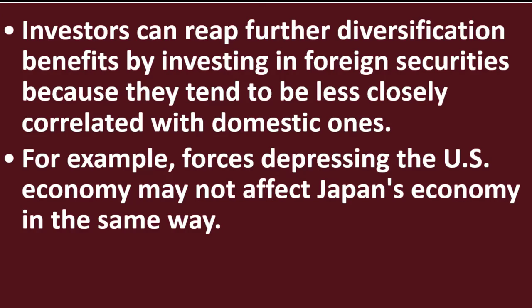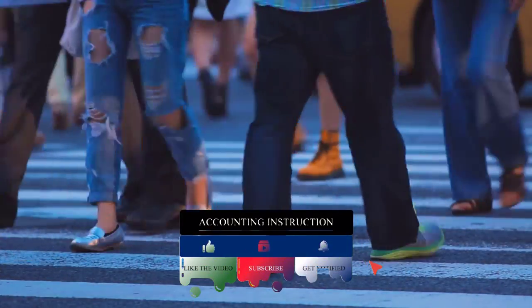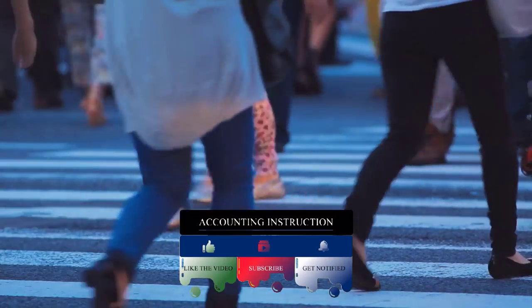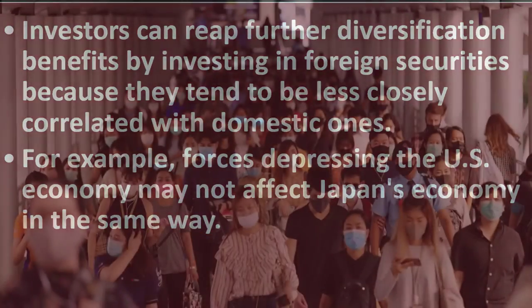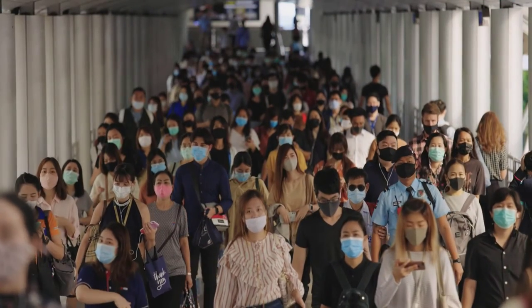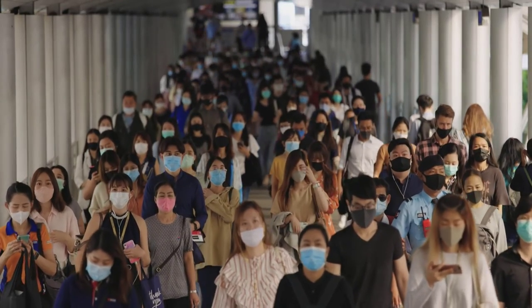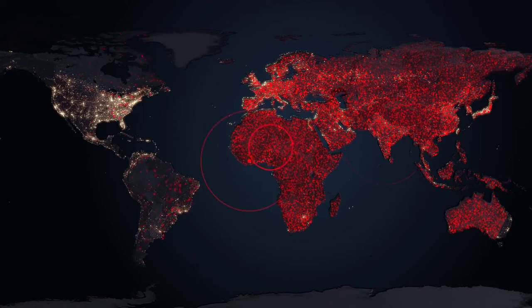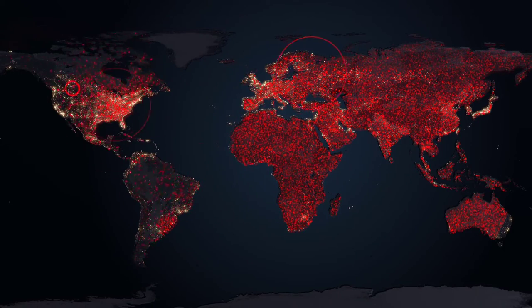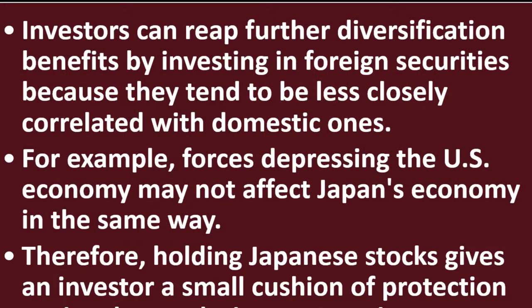For example, forces depressing the U.S. economy may not affect Japan's economy in the same way. More and more people have argued it's a global economy, with supply chains that run across the entire world. However, recently with the COVID pandemic, more people are decoupling from that global supply chain concept, seeing that the risk of a disruption in that supply chain can be quite costly. Therefore, exposure to other areas could be less correlated.